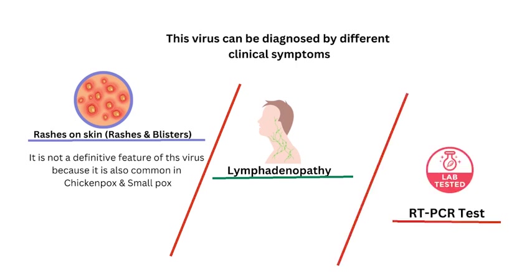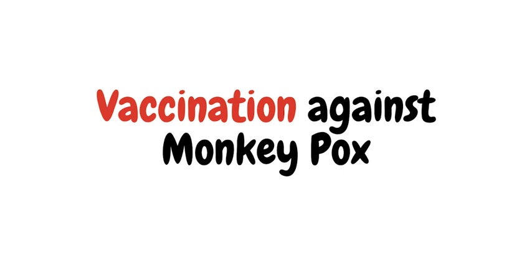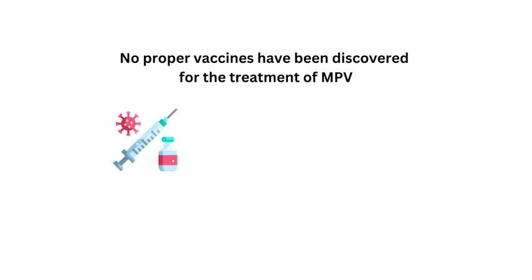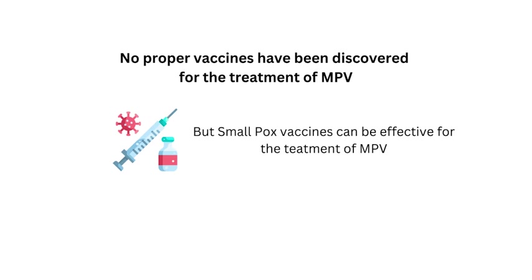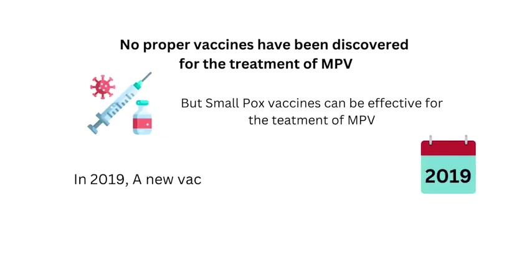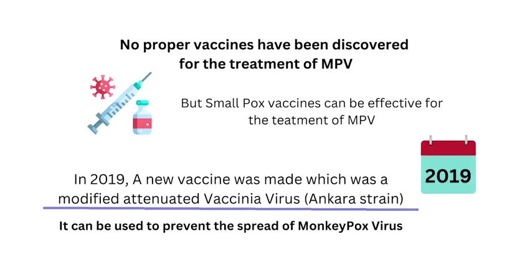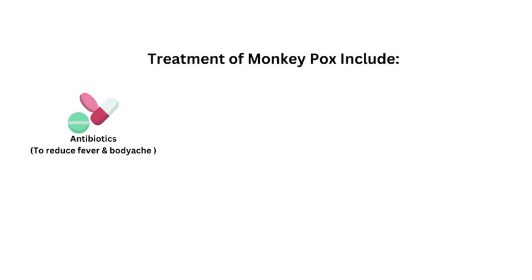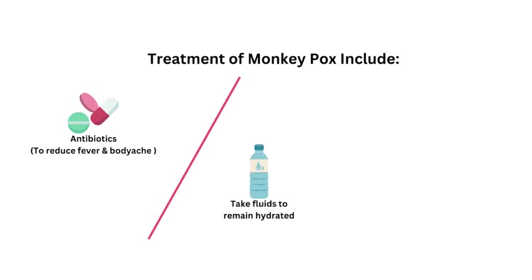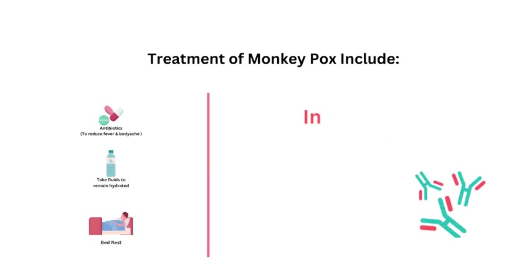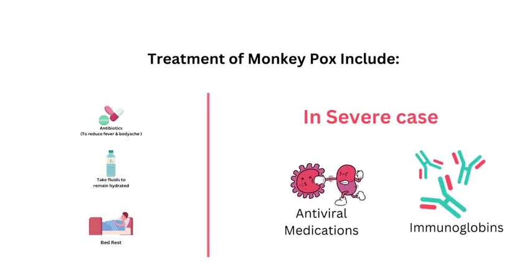No proper vaccine has yet been discovered specifically for monkeypox, but smallpox vaccines can be effective. In 2019, a new modified attenuated vaccine was developed that can be used to prevent the spread of monkeypox virus. Treatment includes taking antibiotics to reduce fever and body aches, taking enough fluids to remain hydrated, and getting bed rest. In severe cases, antiviral medications and immunoglobulins are also prescribed.